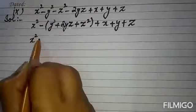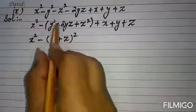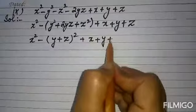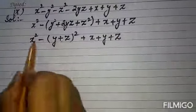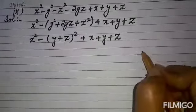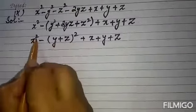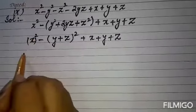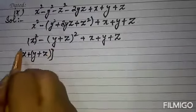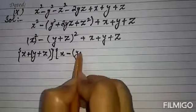Y² + 2YZ + Z² is a perfect square in the form a² + 2ab + b², which equals (Y + Z)². So the expression becomes X² - (Y + Z)² + X + Y + Z. This is now in the difference of squares form a² - b², where A is X and B is (Y + Z). Applying the formula gives (X + Y + Z)(X - Y - Z).